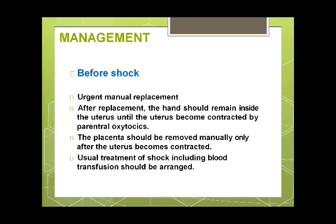After replacement, the hand should remain inside the uterus until the uterus contracts under parenteral oxytocin. If the constriction ring has not yet developed, replacement is much easier. The hand is kept inside after reduction to prevent re-inversion, and then parenteral oxytocins are given. Importantly, if the placenta is still adherent at the time of inversion, it should never be removed until after the inversion has been corrected.